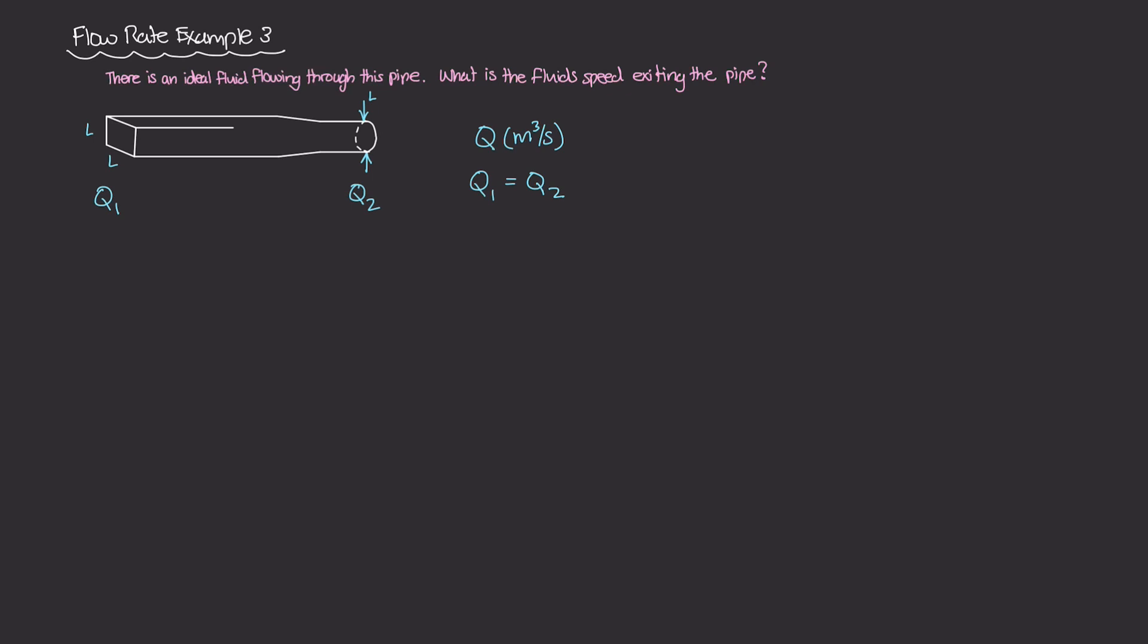And what do we know about flow rate? Well, Q is equal to velocity times the cross-sectional area. Q1, which is velocity 1 times A1, is equal to velocity 2 times A2. And our question is asking, what is this V2? What is the velocity at the second point? Or in other words, what is the velocity here that's exiting the pipe?